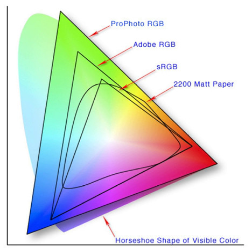A color model is an abstract mathematical model describing the way colors can be represented as tuples of numbers, e.g. triples in RGB or quadruples in CMYK. However, a color model with no associated mapping function to an absolute color space is a more or less arbitrary color system with no connection to any globally understood system of color interpretation.